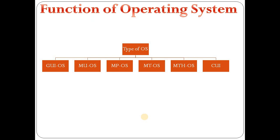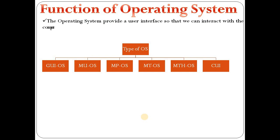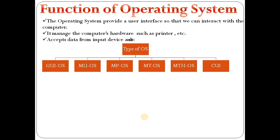Now, let's look at the functions of an operating system. The operating system provides a user interface so that we can interact with the computer. It manages the computer hardware system, such as printers and other devices attached to the computer. It also accepts data from input devices and transfers it to the computer.